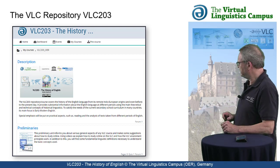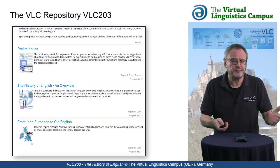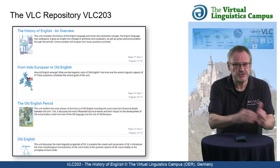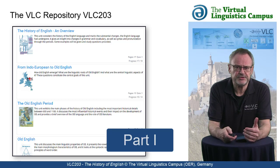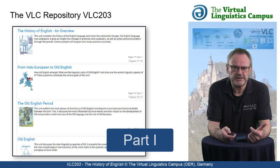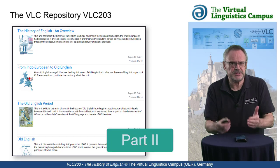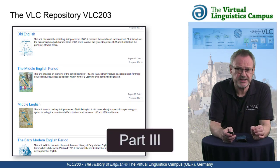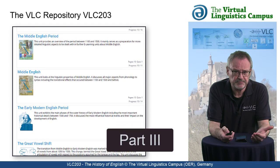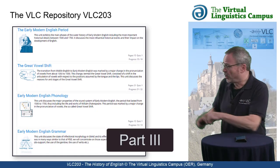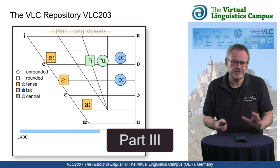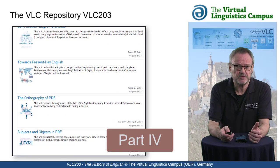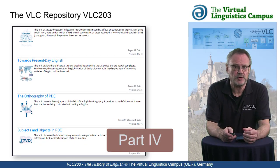And here is how we organize the content of VLC 203 for you. The topics are arranged from past to present, starting with the origins of English and its earliest forms in part one, via the discussion of the Middle English period and language in part two. Special emphasis is laid on early modern English in part three, including a detailed discussion of the great vowel shift, one of the most influential sound shifts in English. The remaining part looks at recent developments with a final focus on present day English orthography.